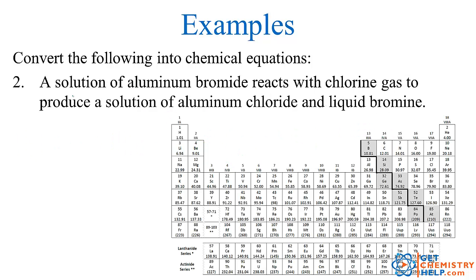How about number two? A solution of aluminum bromide reacts with chlorine gas to produce a solution of aluminum chloride and liquid bromine. Now first off, before we get into this, let me just remind you.